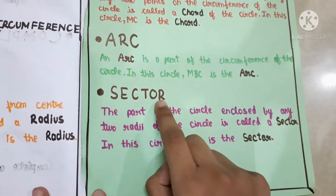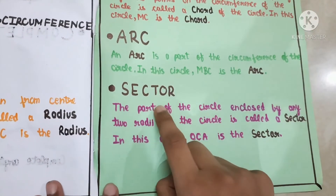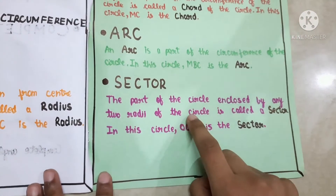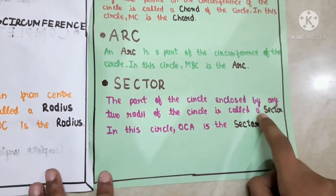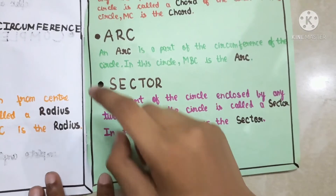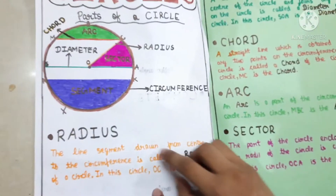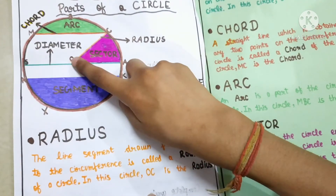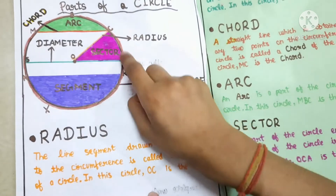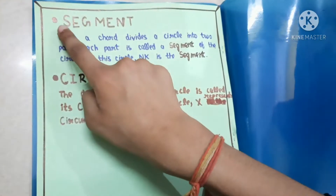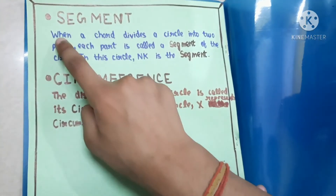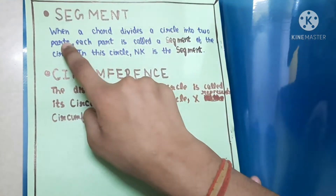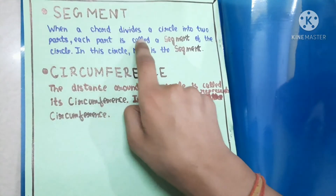Sector: the part of the circle enclosed by any two radii of the circle is called a sector. In this circle, OCA is the sector. Segment: when a chord divides the circle into two parts, each part is called a segment of the circle.